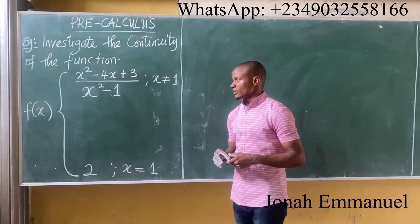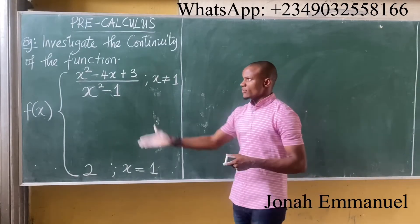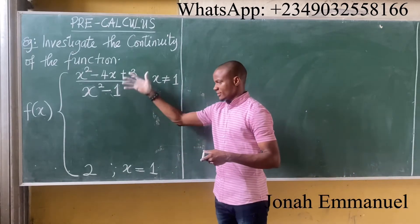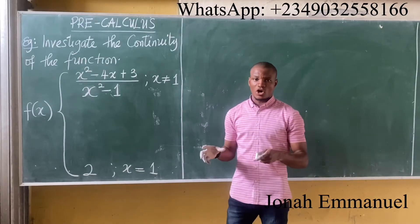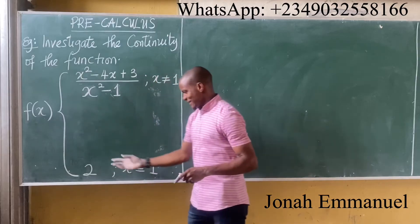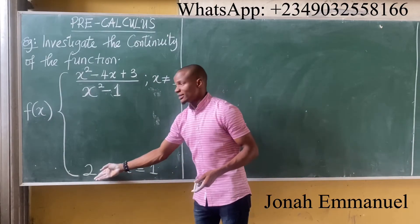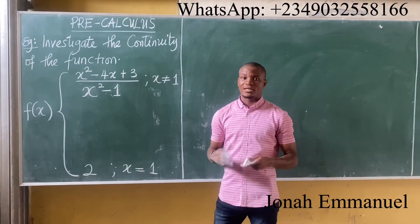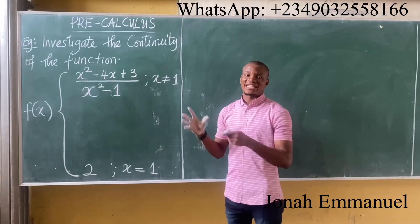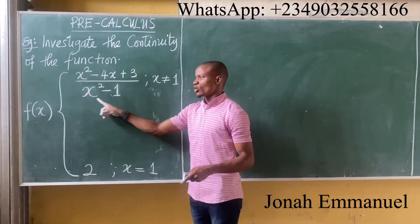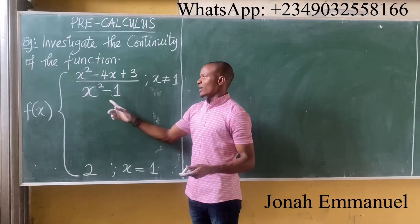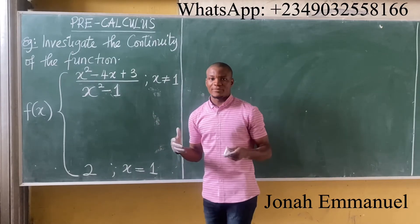Now let's look at another question investigating the continuity of functions. We are given a new function to investigate. The idea is to take the limit at x equal to 1. If our answer gives 2, it's continuous; if not, it's not continuous. Direct substitution gives a denominator of 1² minus 1 equal to 0, which is indeterminate.